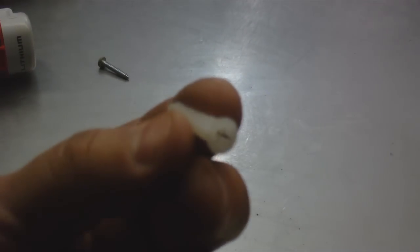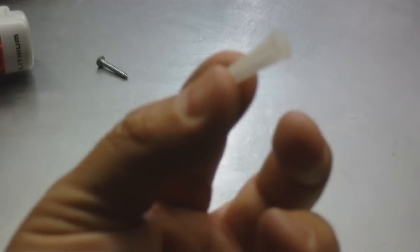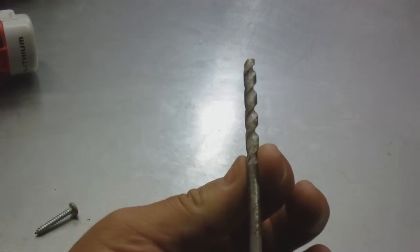The conical plastic anchor, the number 10 screw. The masonry bit is quarter inch. They come in various sizes.